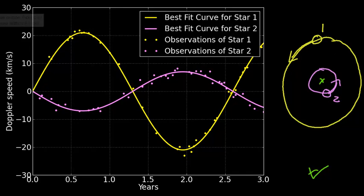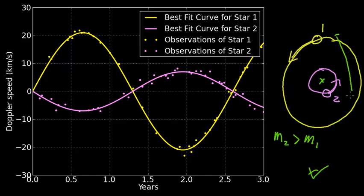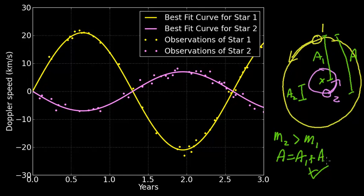We can immediately see that the mass of two has to be greater than mass of one, and any answer we come to will have to agree with that. To determine the masses, we apply Kepler's law, and for that we need the distance between the two objects — call it A. We can break this into two distances: A1 is the distance from star one to the center of mass, and A2 is the distance from star two to the center of mass, so A equals A1 plus A2. This is the distance we need for Kepler's law.